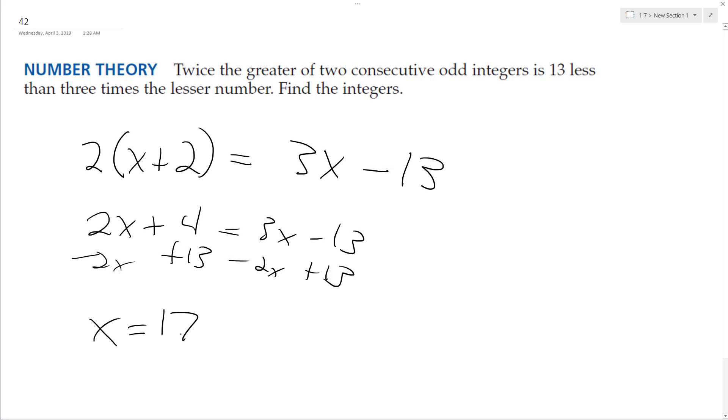So if x equals 17, the consecutive odd number, the next odd number, is going to be 19.